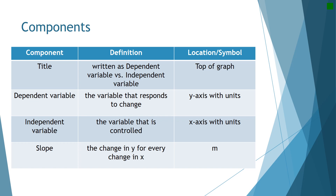There are a few components that every graph will need, especially every line graph. First, you need a title. You will write the title at the top of the graph, and it will always be written in the format of dependent variable versus independent variable. You want to apply it directly for your graph — so something like mass versus volume.